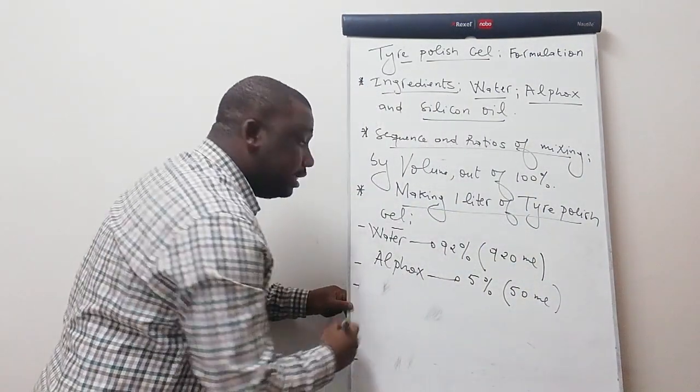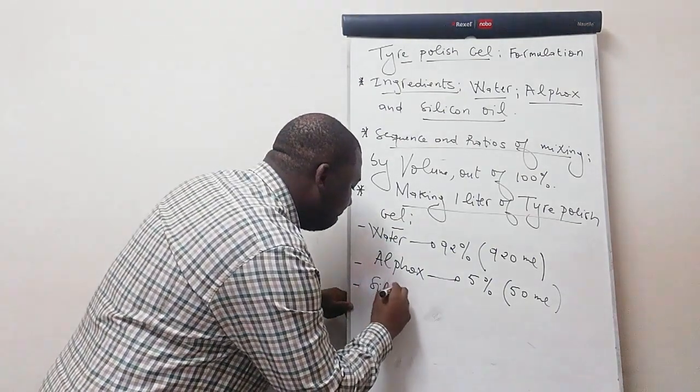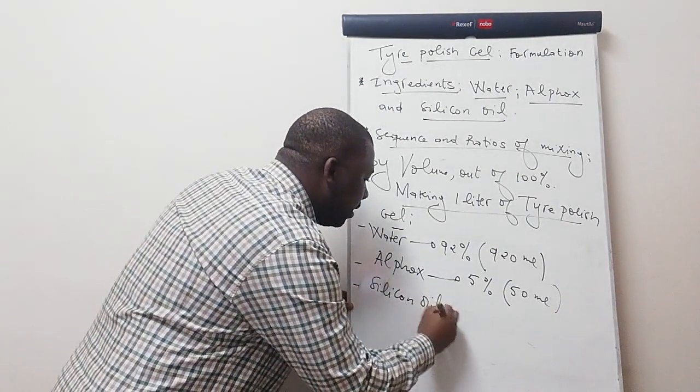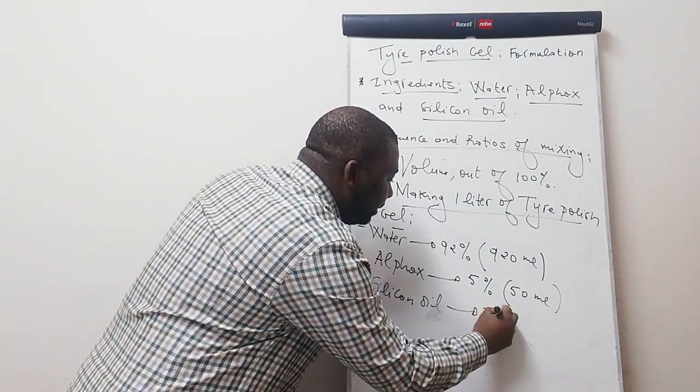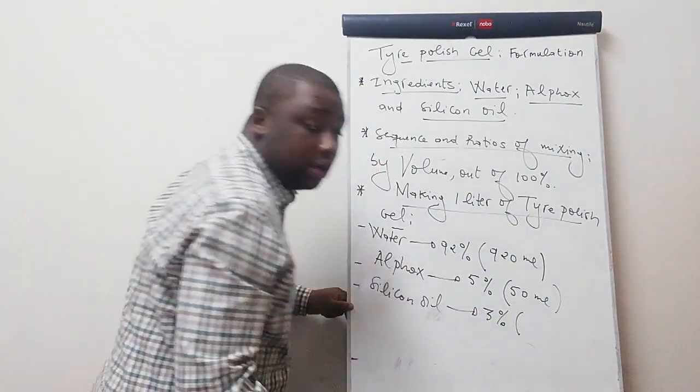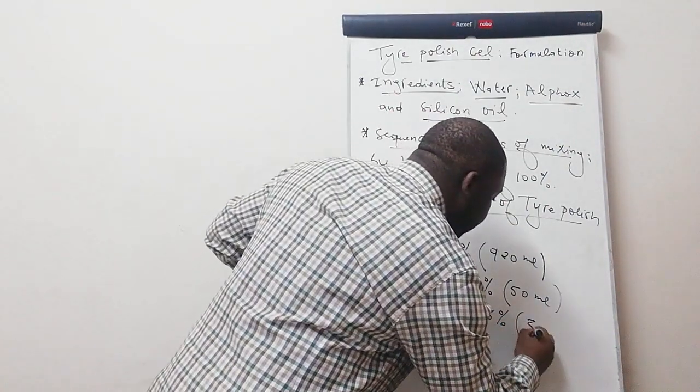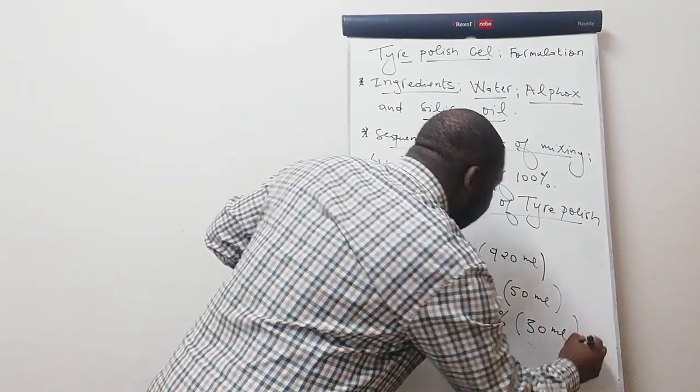And then the next ingredient is silicon oil. Silicon oil should be 3% of the total volume. We need to consider about 30 ml of silicon oil.